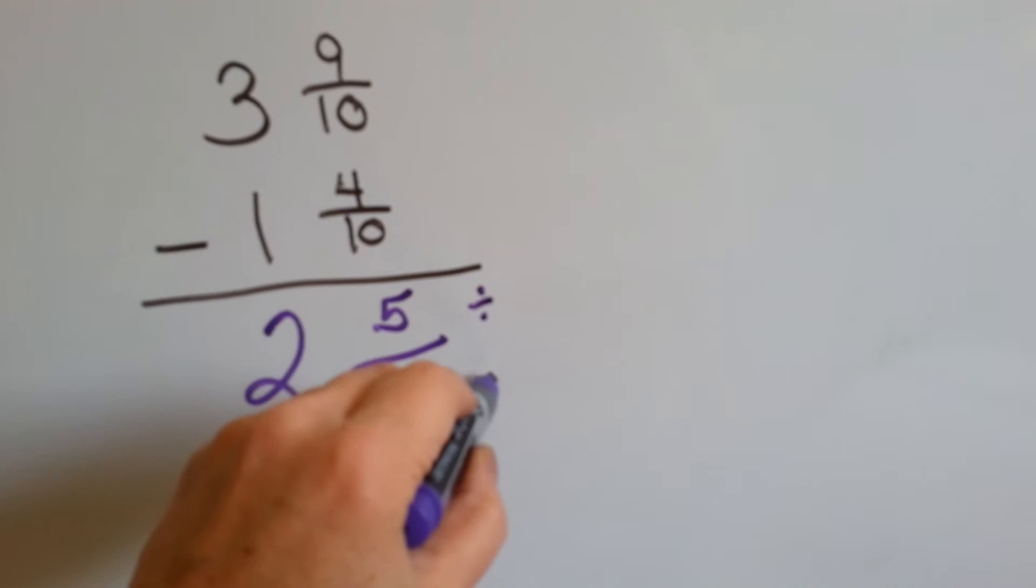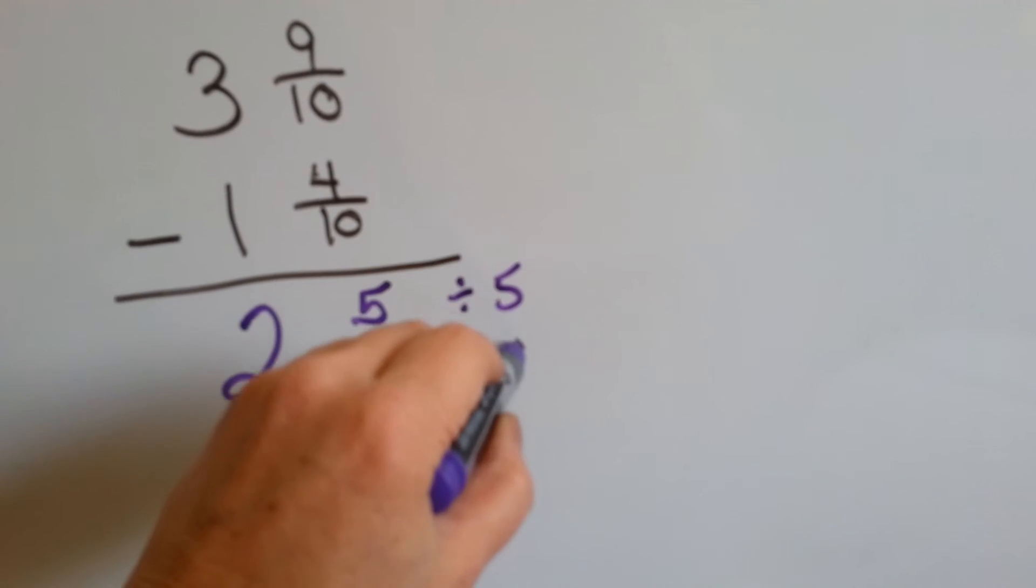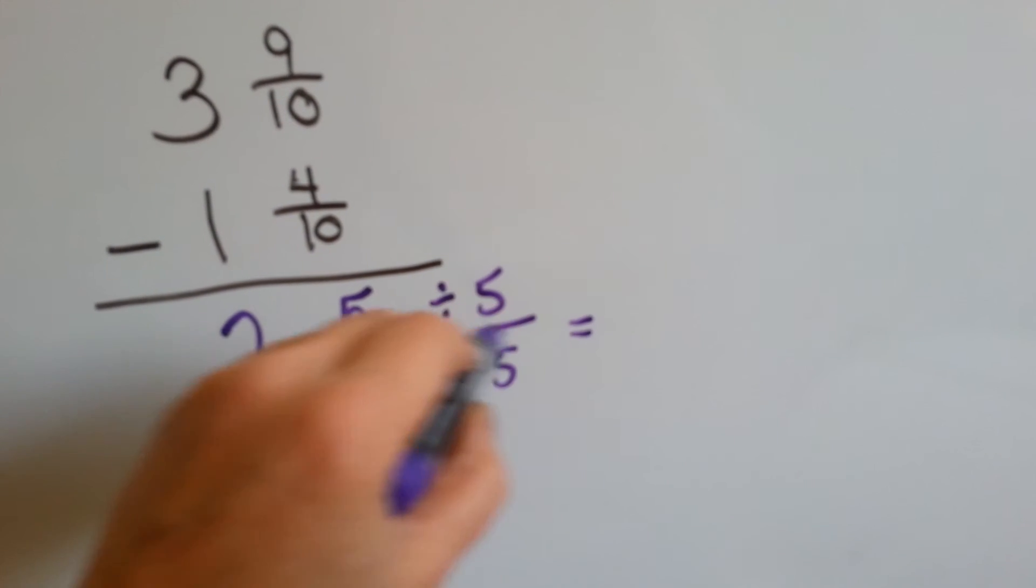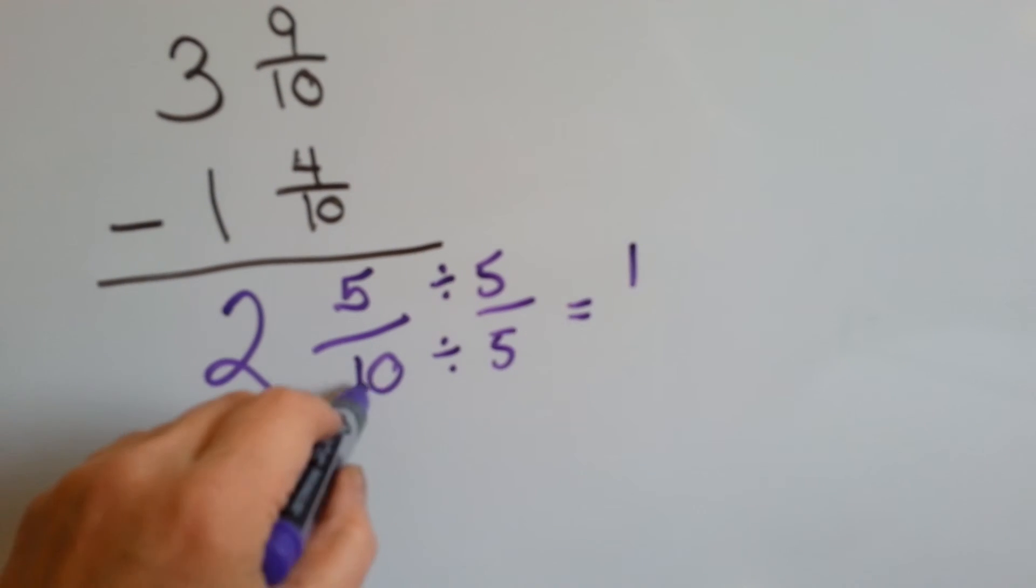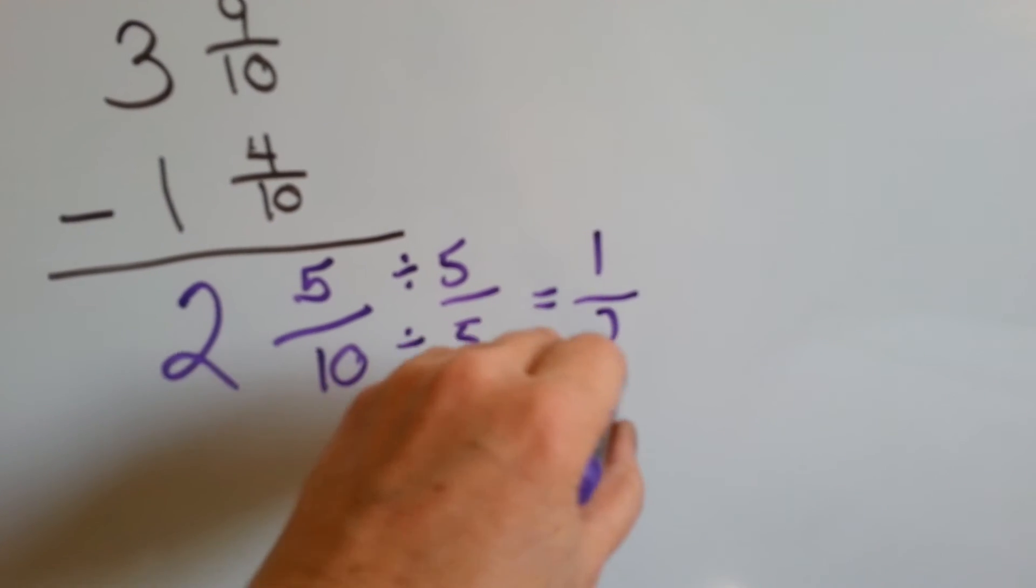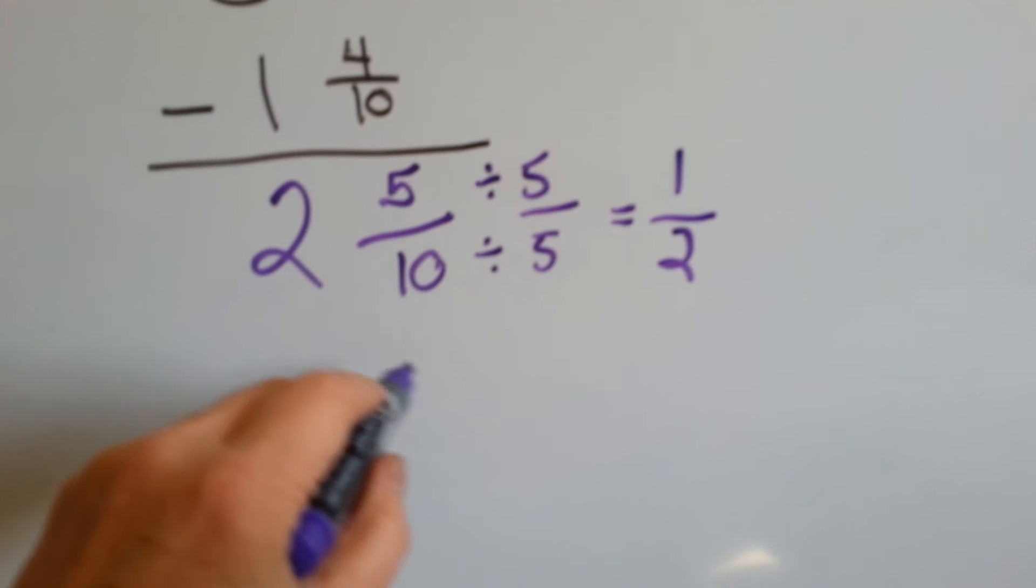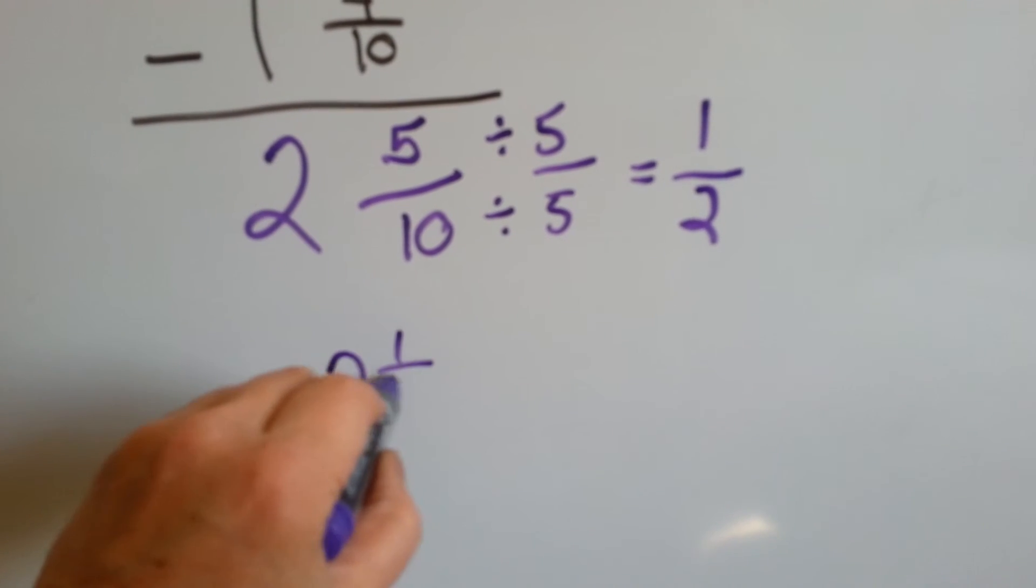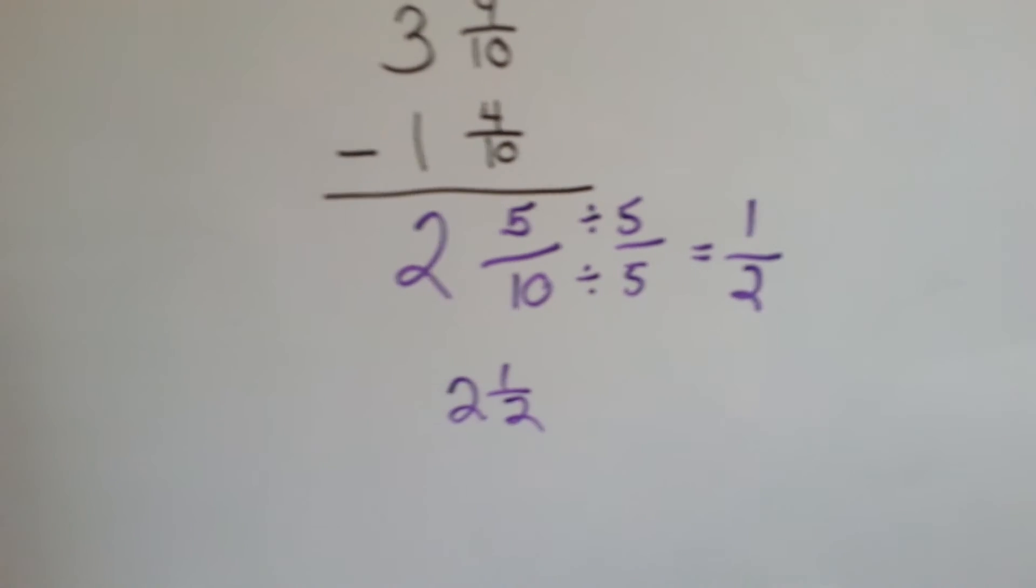If we divide the top and the bottom by 5, 5 divided by 5 is 1, 10 divided by 5 is 2. 5 tenths becomes 1 half, and our answer becomes 2 and a half. Wasn't that easy?